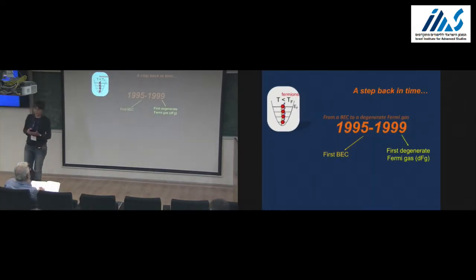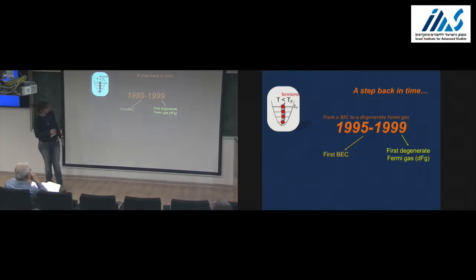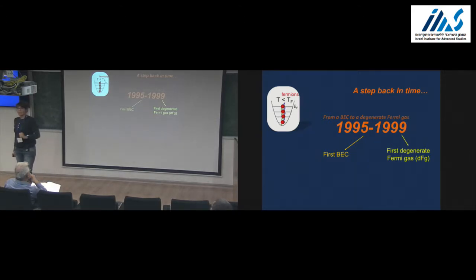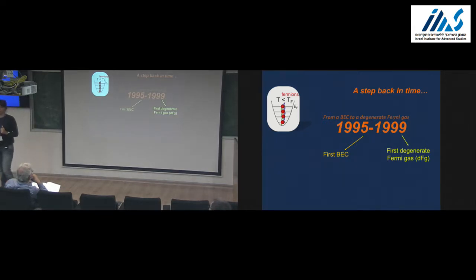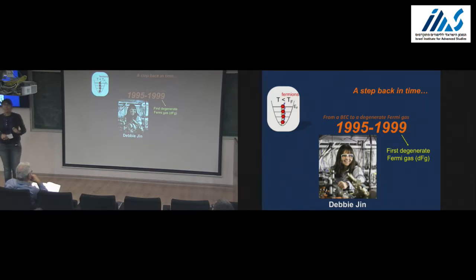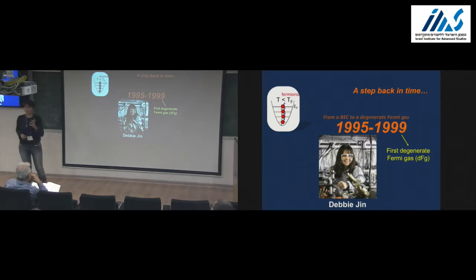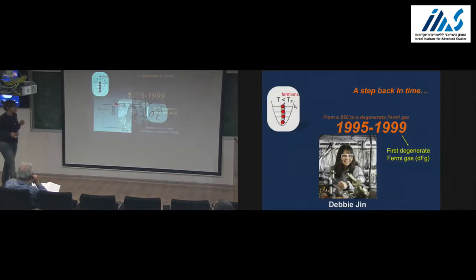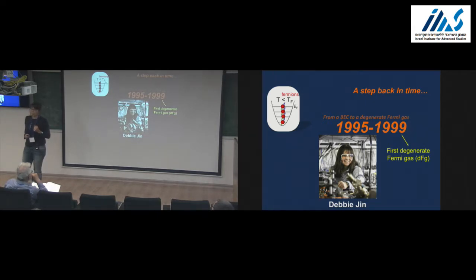Let me give an historical step back. The first Bose-Einstein condensation — entering the quantum regime with bosons — was done in 1995. The first degenerate Fermi gas was done four years after. Why four years? There is a scientific reason. The person who pioneered the field of fermions is Debbie Jin, who unfortunately left us last year. She was really pushing the field of degenerate Fermi gas and was able, together with her group, to for the first time reach the degenerate regime with fermions. But why four years? What is different between these two species? It's really the statistics.